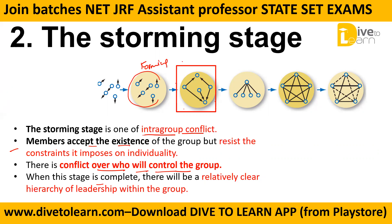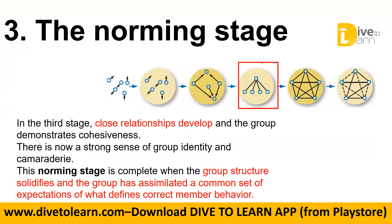The third stage is norming. In the norming stage, close relationships develop and the group demonstrates cohesiveness. What is acceptable in the group — the group norms — solidifies here. The norming stage is complete when the group structure solidifies and the group has assimilated a common set of expectations about what is the correct or acceptable member behavior.